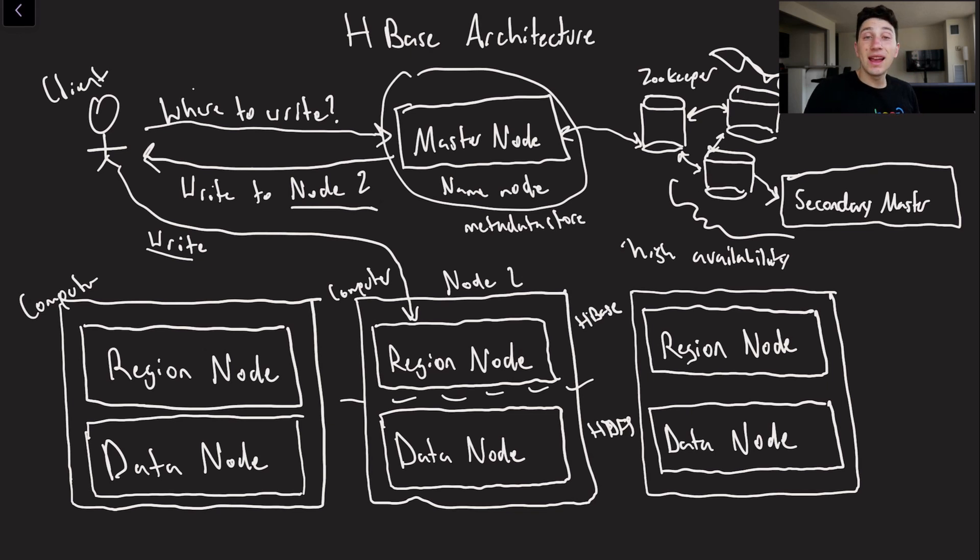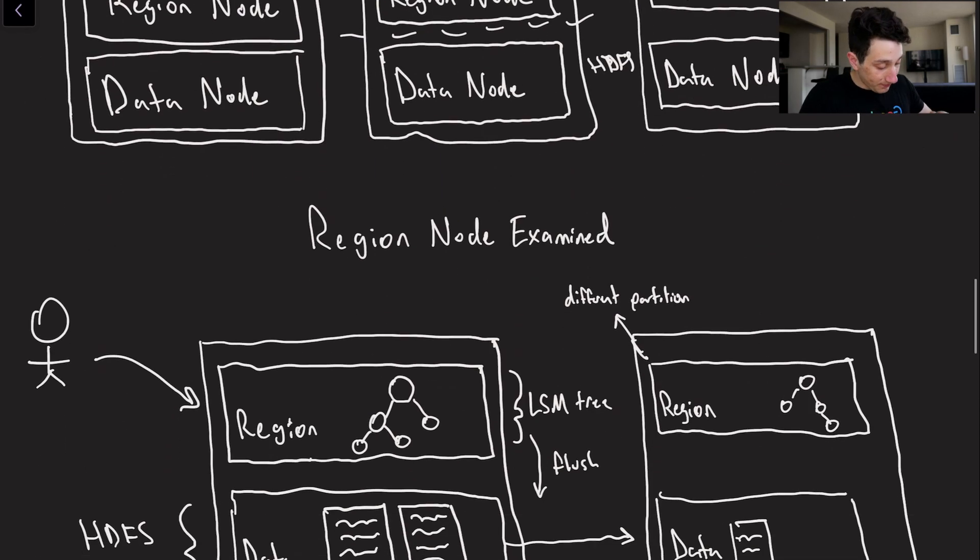Zookeeper can then be read by a secondary master node, so if the master were to go down the secondary can take over. So again we now have this concept of a region node and a data node. And keep in mind that our writes are being sent to a specific region node. Let's go ahead and zoom in on that and learn a little bit more.